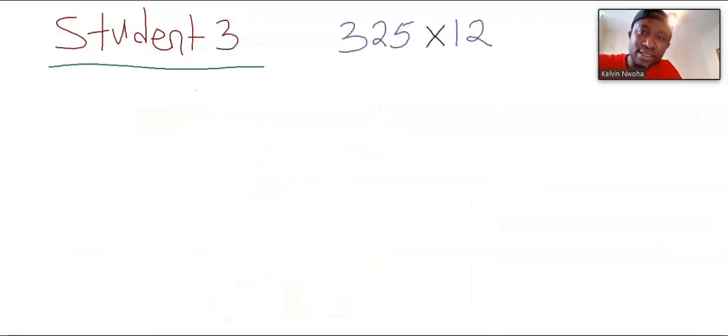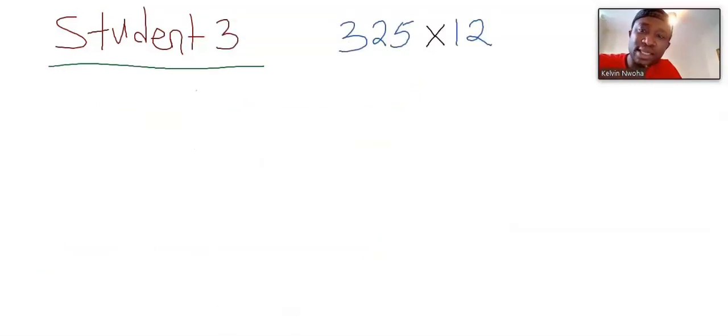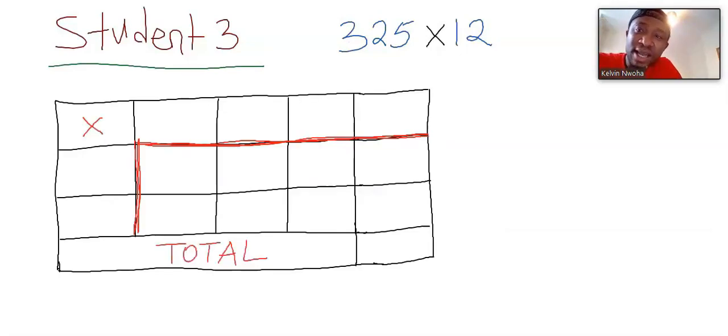Let's consider student 3. What did this student do differently? Now, the first thing that student 3 did was to draw a table like this.